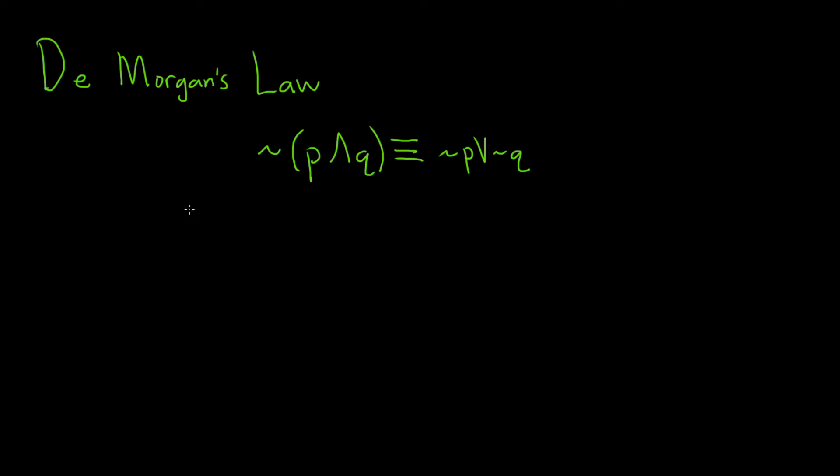In this problem, we're going to verify De Morgan's Law using truth tables. De Morgan's Law says if you negate p and q, that's the same as not p or not q.